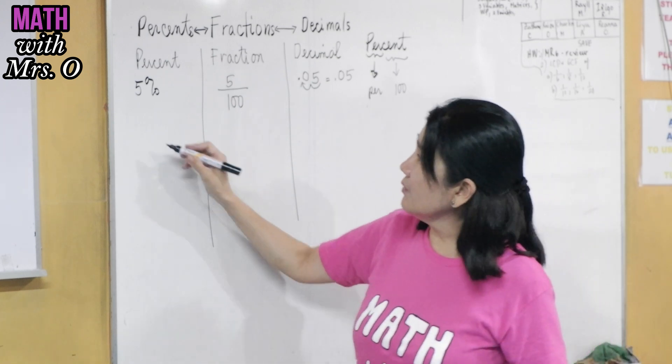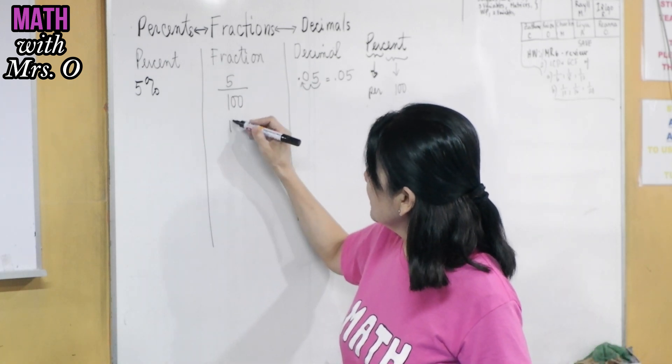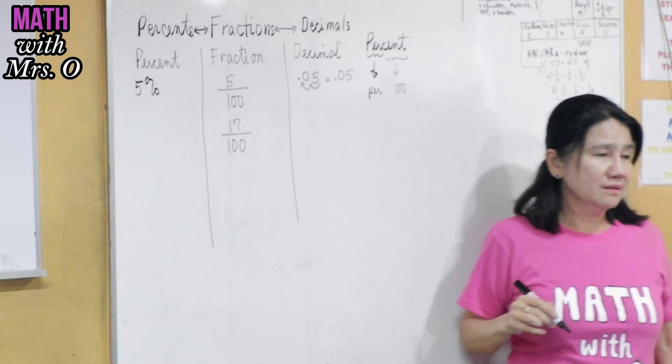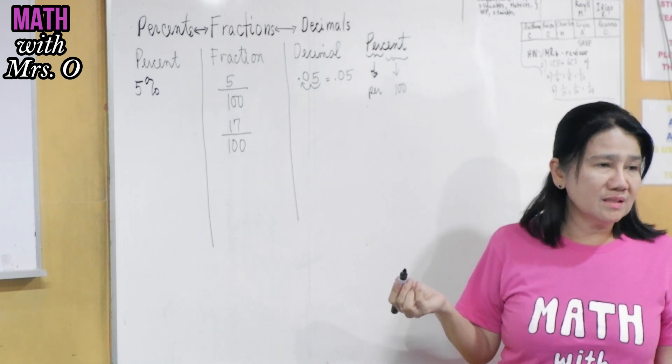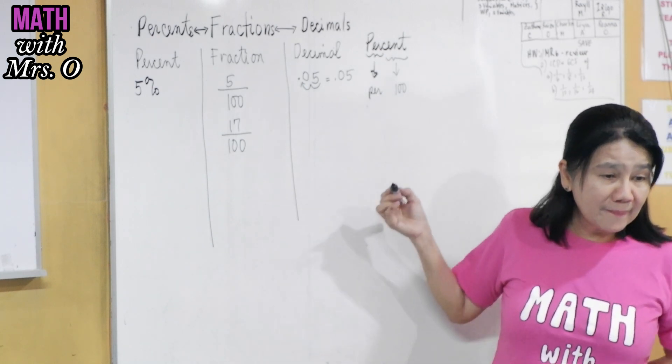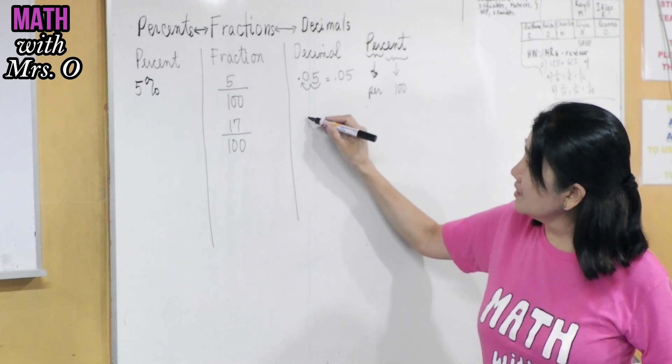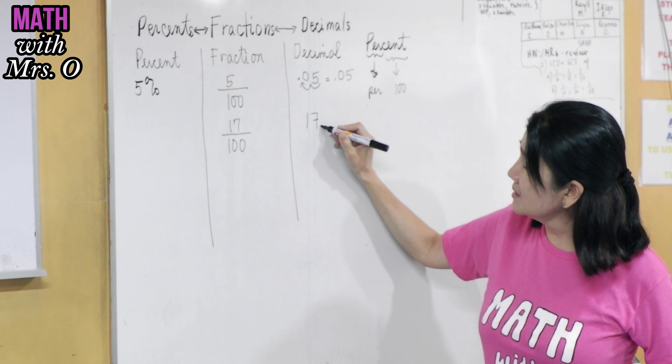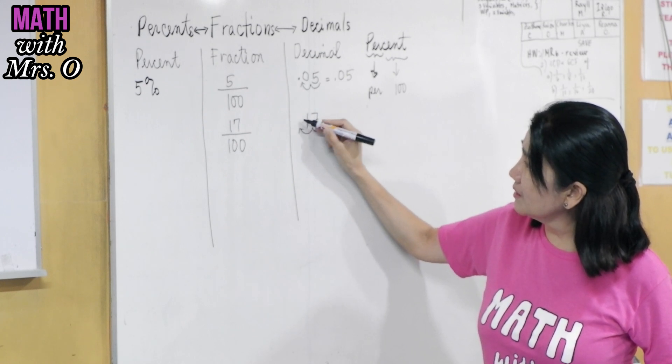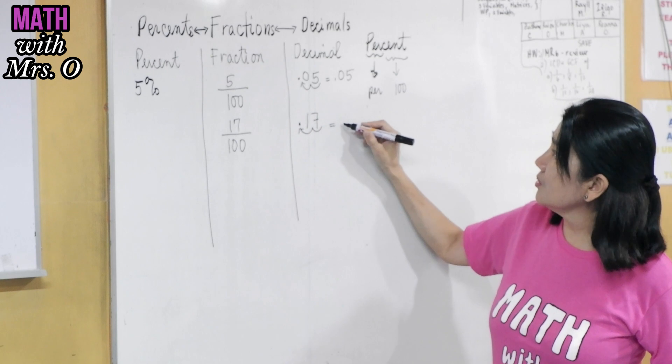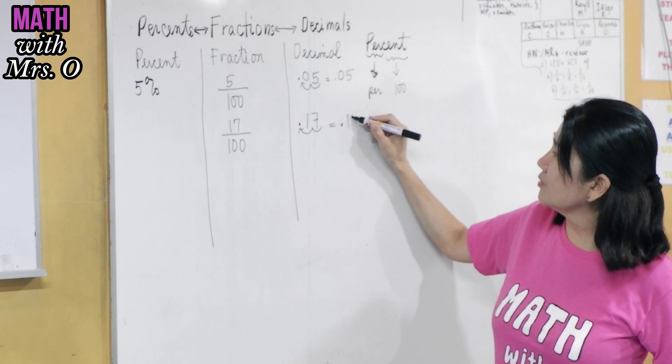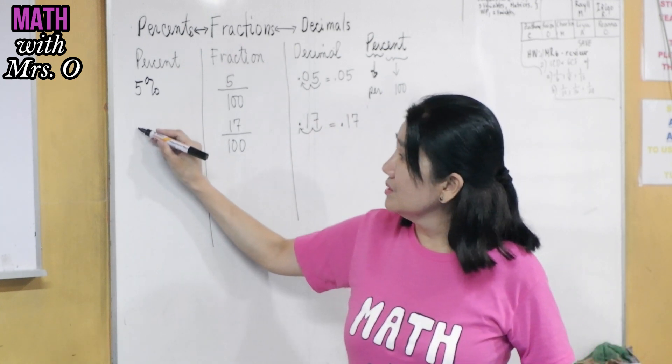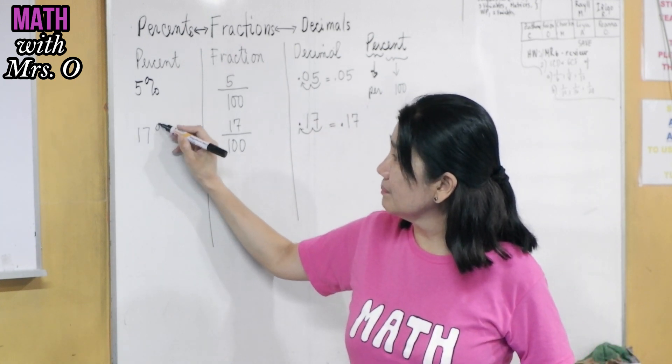So what about if we have here 17/100? What if it is 17/100? What is it as a decimal? Yes, 0.17. So you copy the 17 per 100 means moving the decimal point two places to the left. So you have here the decimal equivalent to be 0.17. And so this is now 17 percent.